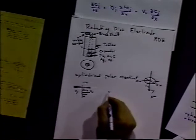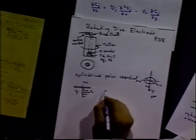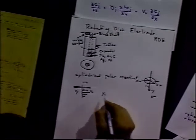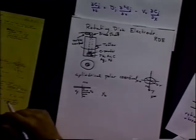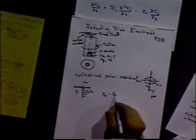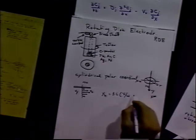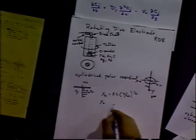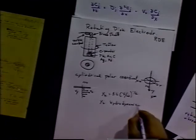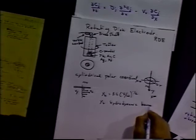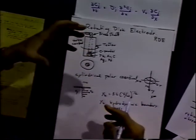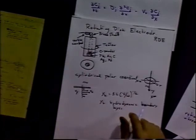There is a hydrodynamic boundary layer. The distance where that velocity is considered—the hydrodynamic boundary layer—is called 3.6 times nu over omega to the one half. So y sub h is the hydrodynamic boundary layer. At distances closer than y sub h, the velocity becomes small; at distances greater than y sub h, the velocity becomes small again.